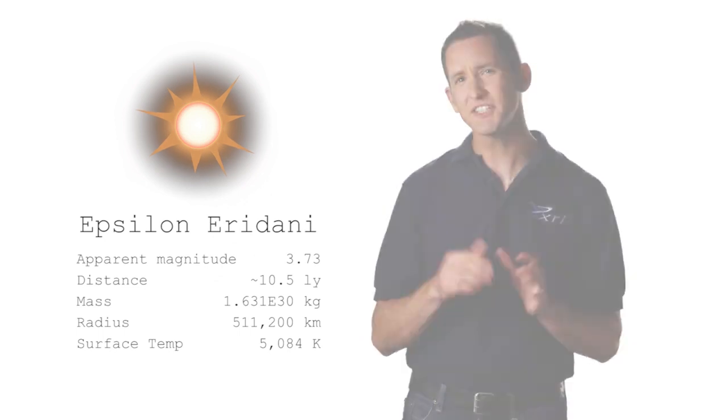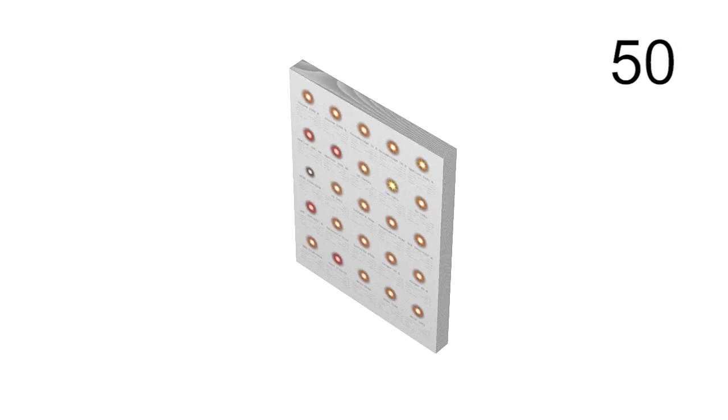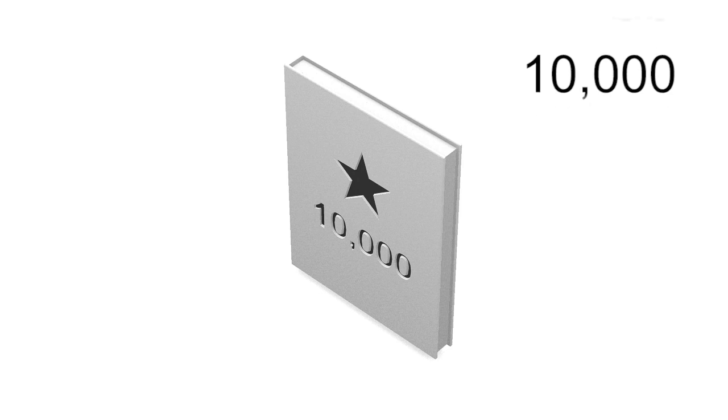We'll want to include a picture and some basic information on each star, so let's say we can include 25 entries per page, or if you use both sides of the page, 50 entries. If we put 200 pages together, then we end up with a nice book of about 10,000 stars.